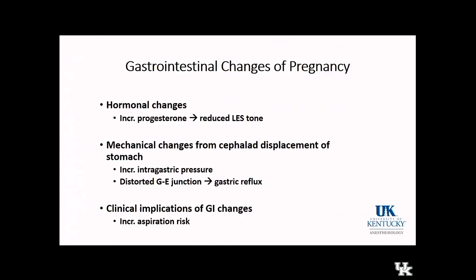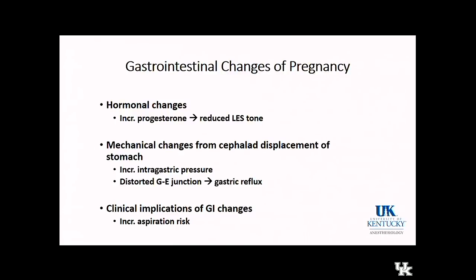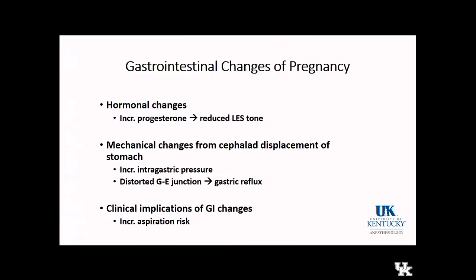Moving on to gastrointestinal changes of pregnancy: the hormonal changes include a significant rise in progesterone, responsible for multiple physiologic changes. In terms of GI changes, increased progesterone reduces lower esophageal sphincter tone. Mechanical changes from displacement of the stomach by the gravid uterus can increase intragastric pressure and distort the GE junction, contributing to significant gastric reflux. The clinical implication is that pregnant women are generally considered to be at increased aspiration risk.